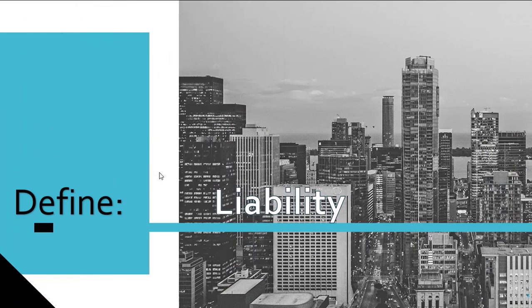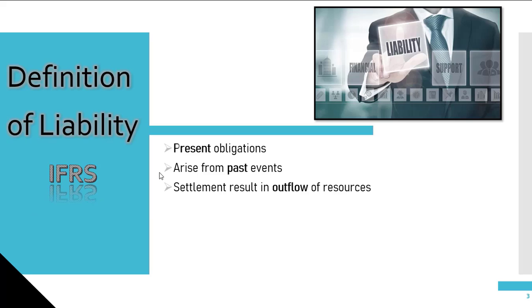Before we differentiate between provisions and contingent liabilities, let's review the definition of a liability under IFRS. Under IAS 37, liabilities are defined as present obligations to a company that arises from past events where the settlement is expected to result in an outflow of company resources, an example of that being cash.